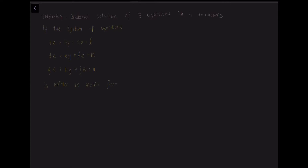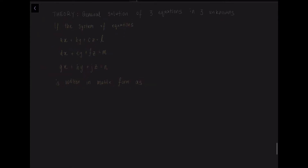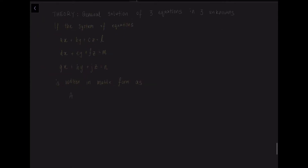Where A equals the matrix with entries A, B, C, D, E, F, G, H, J. And x equals the column vector X, Y, Z. And B equals the column vector L, M, N in matrix form.